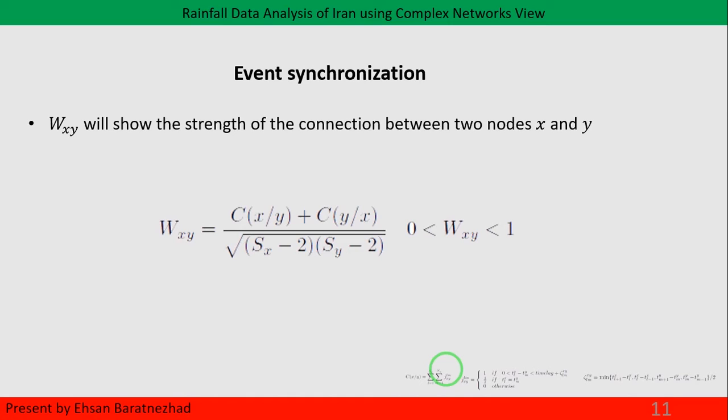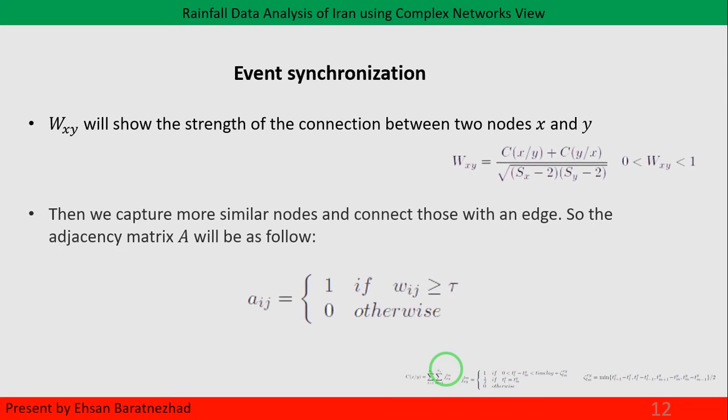If the value w is close to one, that means x and y are totally synchronized. We have to calculate w for all pairs in the temporal data. Now that the matrix W is constructed, we can easily make the adjacency matrix — we just need to define a threshold to decide which nodes should have an edge between them. We used 0.6 for the threshold.